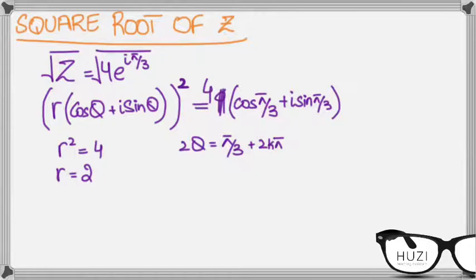Now, for the square root of a complex number, this means that from this number, from one complex number, I'll get two numbers, the two square roots, right.